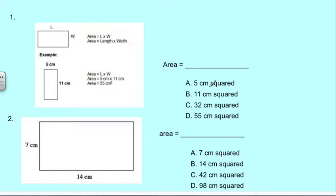Number two, here's what you need to look at. Here's the height, and here's the base. Do what you need to do to find the area. And your choices are A, seven centimeters squared? B, 14 centimeters squared? C, 42 centimeters squared? Or D, 98 centimeters squared?